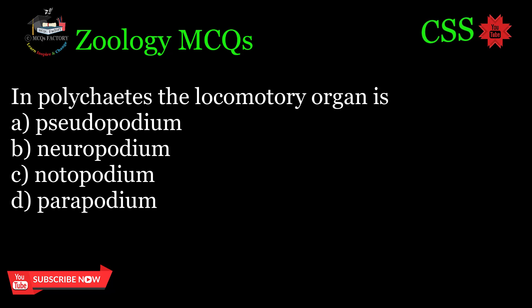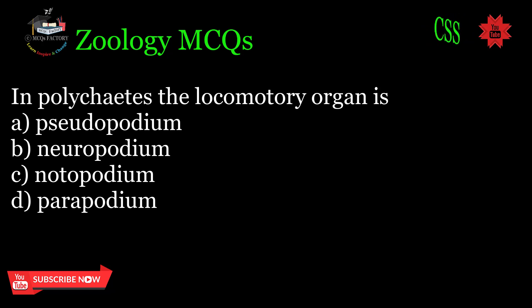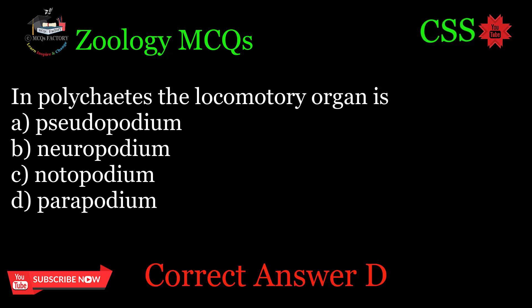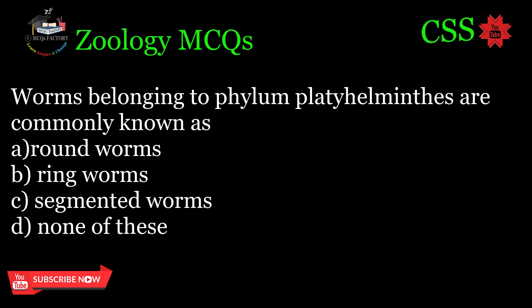In polychaetes, the locomotory organ is: A. Pseudopodium, B. Neuropodium, C. Notopodium, D. Parapodium. Correct answer: D.